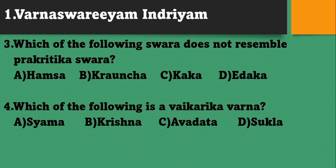Which of the following Swara does not resemble Pragridhika Swara? The Swara that does not resemble the Pragridhi Swara is Edaga, that means Mesha. Mesha does not resemble Pragridhika Swara - it is Vigridhika Swara. Which of the following is Vaigridhika Swara? Vaigridhika Swara is Shukla. Shyama, Krishna, and Avadada are Pragridhika Varna.